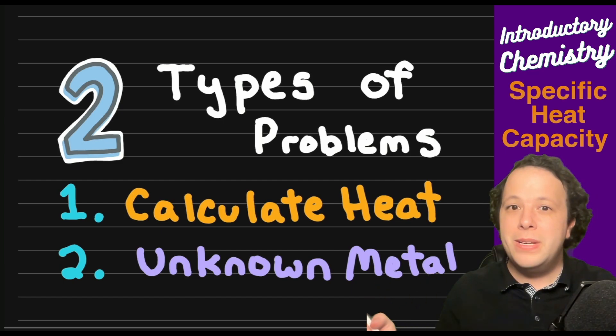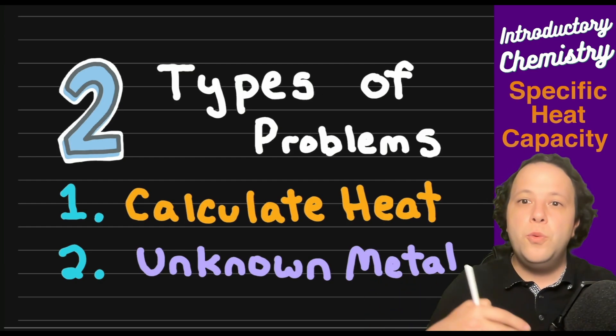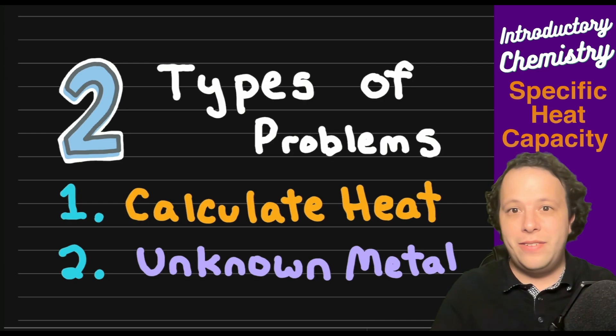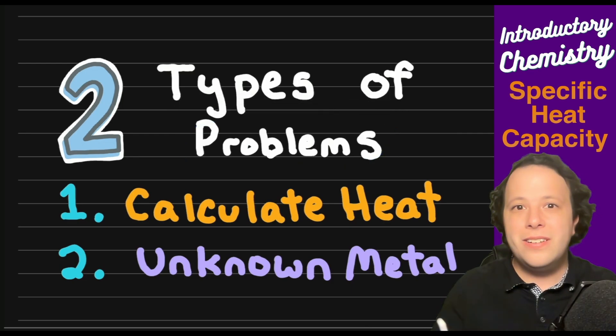The second type of problem is identifying an unknown metal or substance. Being that specific heat is unique for every single material, we can use this to identify things. Let's try to take a look at each of these problems.